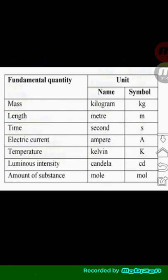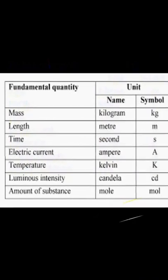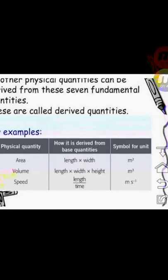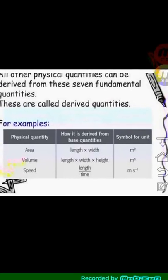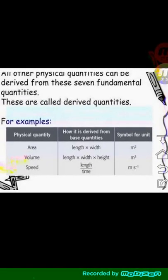We have their corresponding unit names and symbols. While the derived quantities are the other physical quantities that are derived from these seven fundamental quantities that has just been discussed, derived quantities are dependent on fundamental quantities.